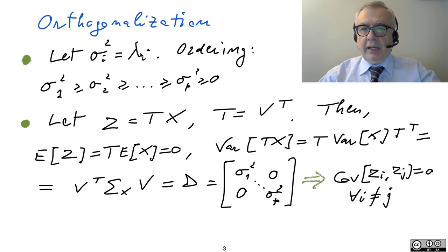So let sigma square I be the ith eigenvalue of sigma X, of the matrix sigma X. We order these eigenvalues from the largest to the smallest one. And finally, we define Zeta equal TX, where T is V transpose.